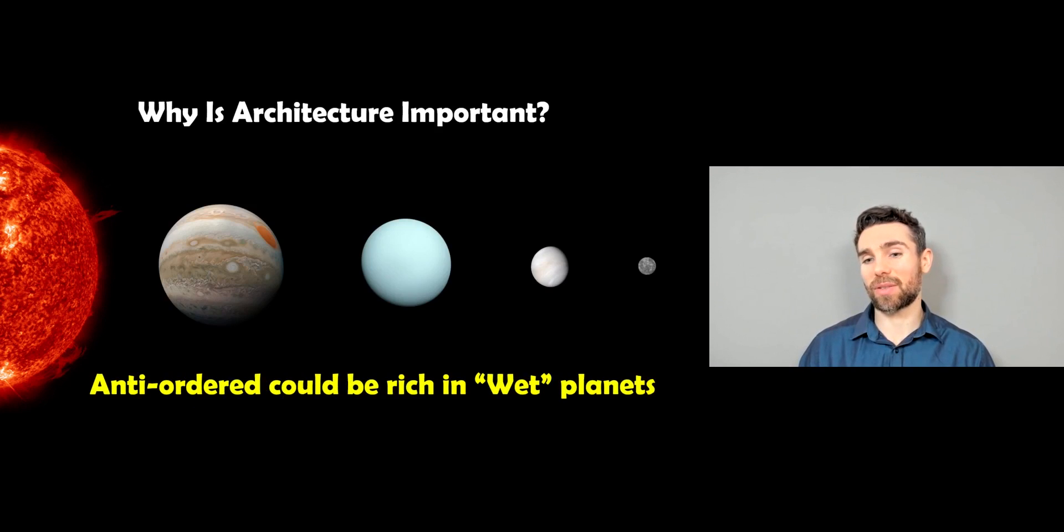And another aspect, this is probably important where you want to look for habitability, is anti-ordered, where you've got the bigger planets close in and the smaller ones further out. These are quite rich in wet planets. These planets, or the planets in these systems, have a higher percentage of water content, or wet planets, compared to other architecture types. So classifying them into different classes can help us decide which ones are going to be the best ones to look for life, which are going to be the most habitable going forward, as we find more and more of these systems.